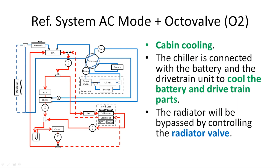This slide shows the mode when the octa valve is changed to O2 position. The chiller is used to cool both the battery and the drivetrain, and the radiator is bypassed by controlling the radiator valve.